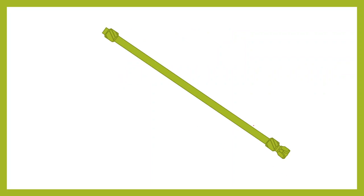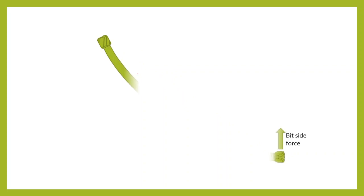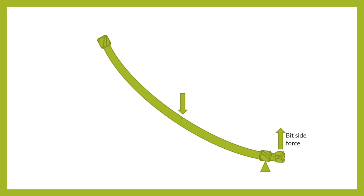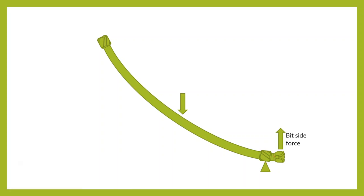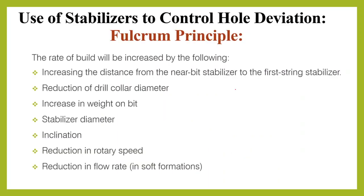Here we can see a drilling BHA with a bit, two stabilizers, and also an inclination angle. If we apply weight on bit, the drill collar will sag down — as we will see in the animation, this is the resulting shape. The weight will sag the drill collar down, the stabilizer will represent the fulcrum point, and the bit side force will move up, increasing the build angle. We can also control the weight according to the angle needed, so that the rate of build will be increased by the following factors.